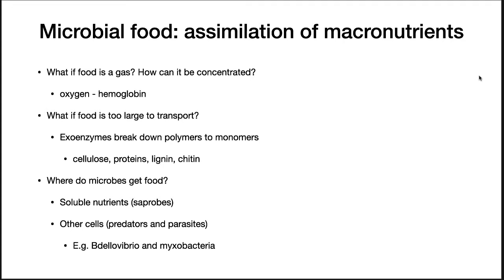There are a few other questions to explore about assimilation. What if the acquired nutrient is a gas? The membrane won't hold it in, so you bind it to an enzyme — for example, your bloodstream picks up oxygen and binds it to hemoglobin inside red blood cells. What if a food is too large to transport, such as a protein or wood lignin or cellulose from a plant cell wall? Microbes will secrete enzymes into the environment to break down these polymers into small pieces and then transport these monomers inside.